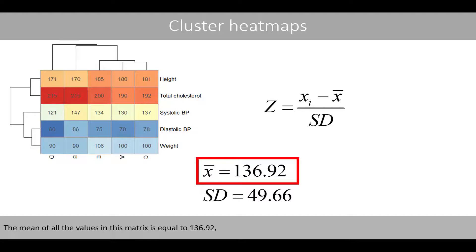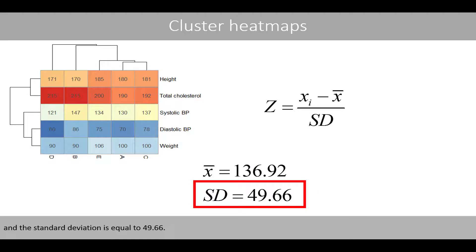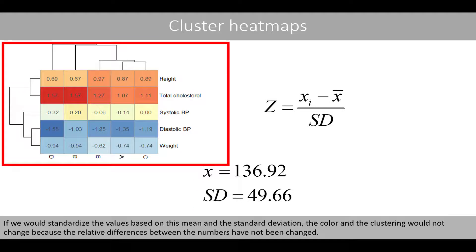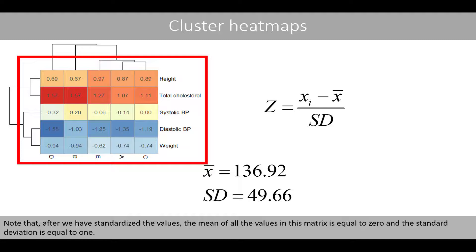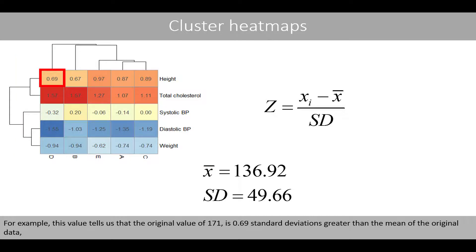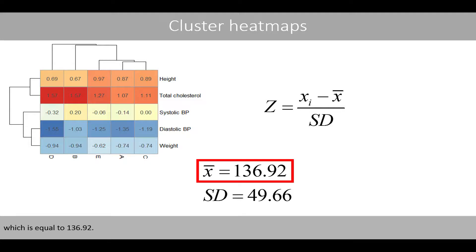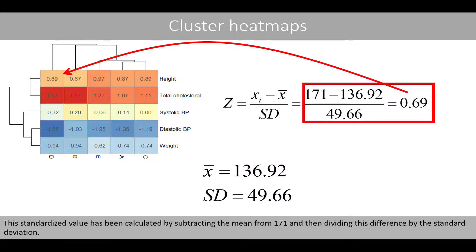The mean of all the values in this matrix is equal to about 136.92, and the standard deviation is equal to about 49.66. If we would standardize the values based on this mean and standard deviation, the color and the clustering would not change, because the relative differences between the numbers have not been changed. The only thing that would change is the numbers behind the colors. After standardization, the mean of all values is equal to 0 and the standard deviation is equal to 1. For example, this value tells us that the original value of 171 is 0.69 standard deviations greater than the mean of 136.92, calculated by subtracting the mean from 171 and dividing by the standard deviation.